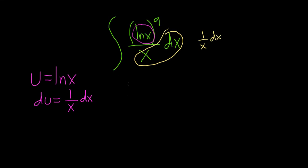So now we can make the substitution. So this is going to be the integral. So the u is our ln x, so we get u to the ninth. And everything that's left over is just your du.